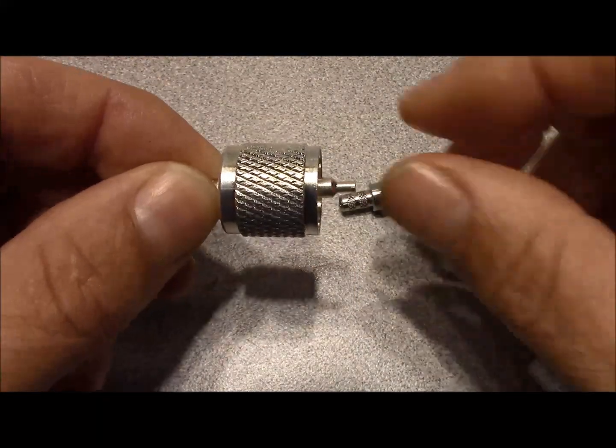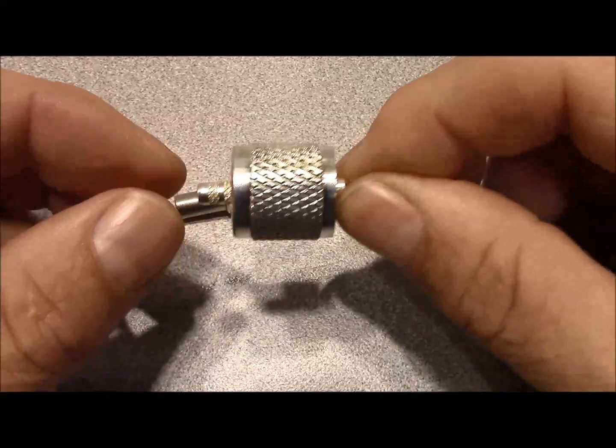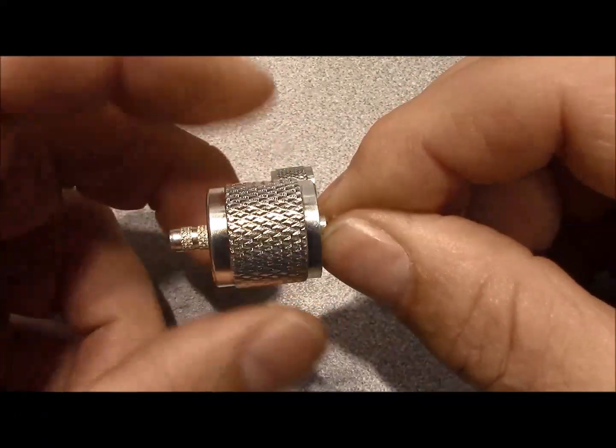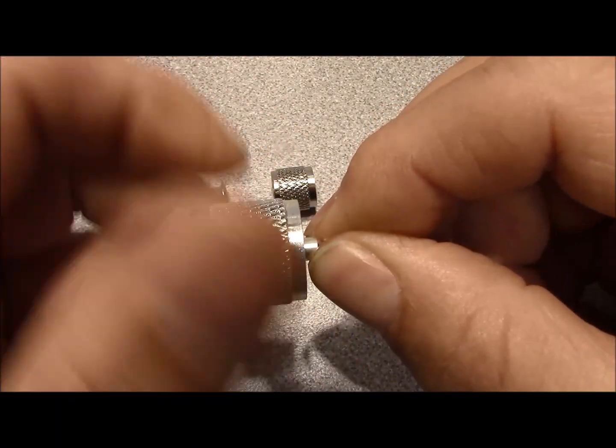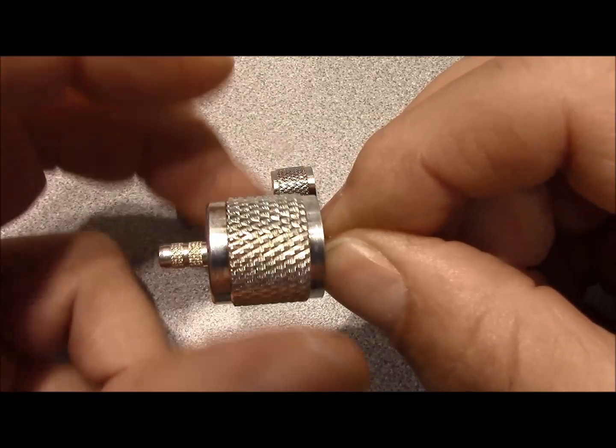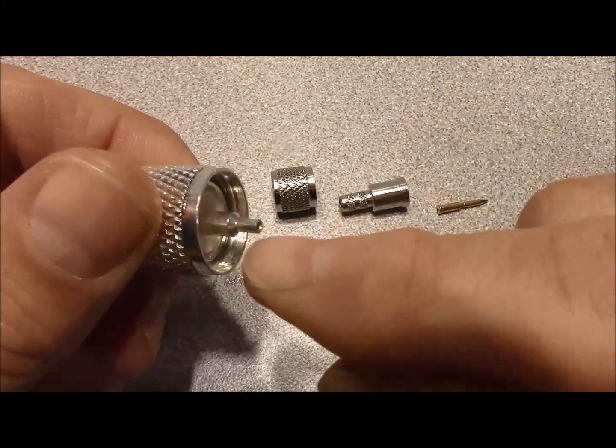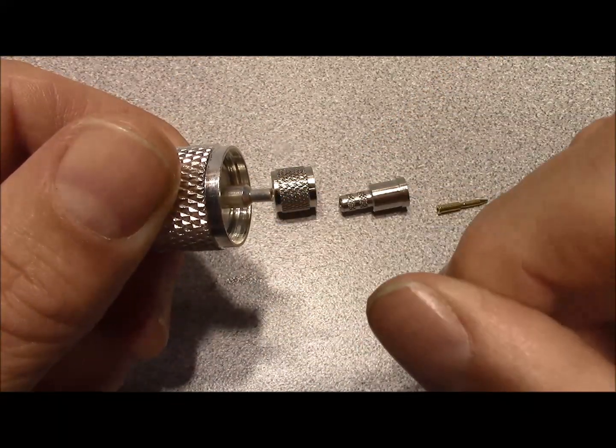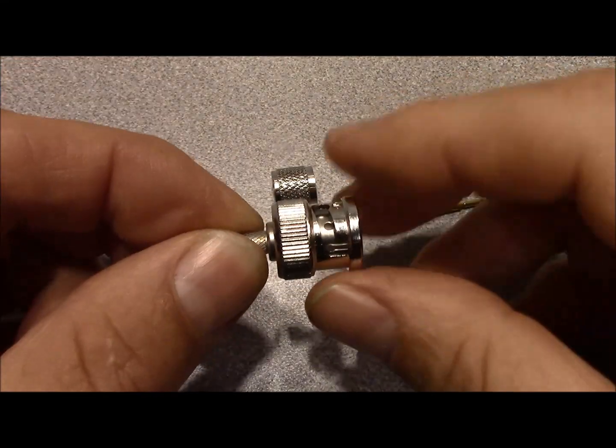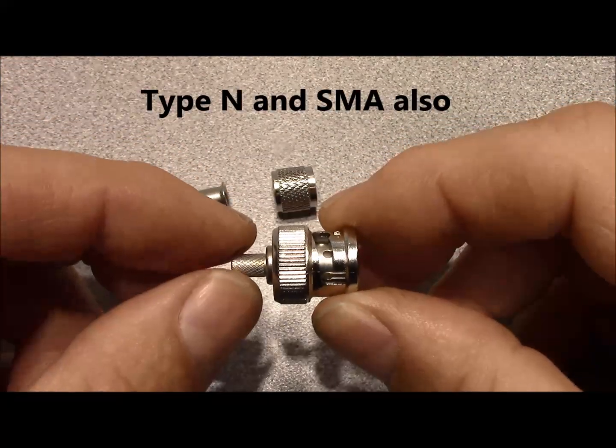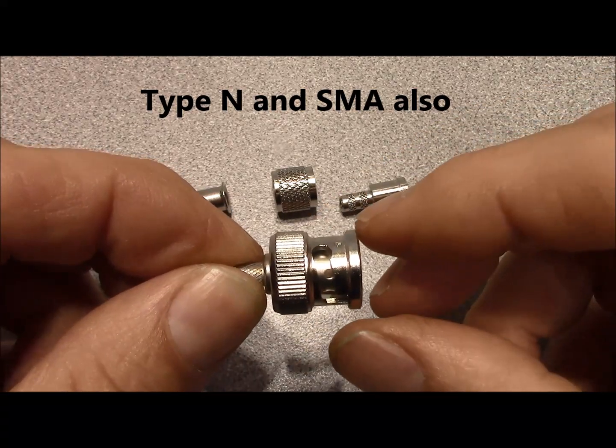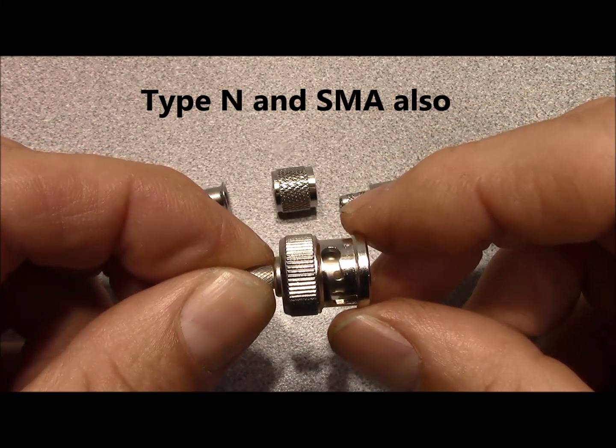If you look at this particular connector here, this is a crimp type PL259 and you can see that the connector shell will actually unthread from the connector body and that the center contact is actually a permanent part of the connector. And your BNC and TNC varieties will have that connector shell permanently attached to the body of the connector.